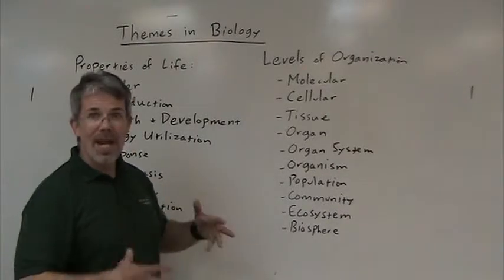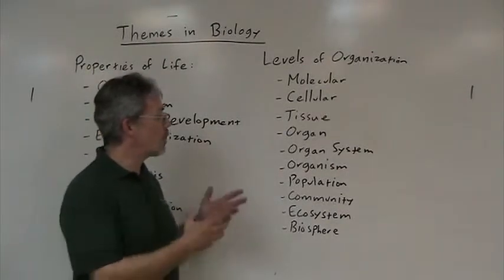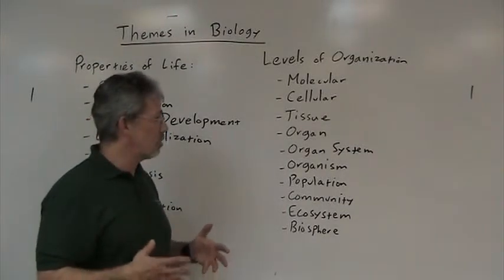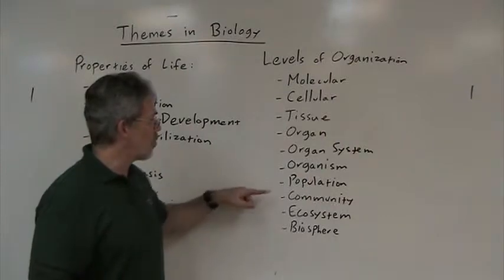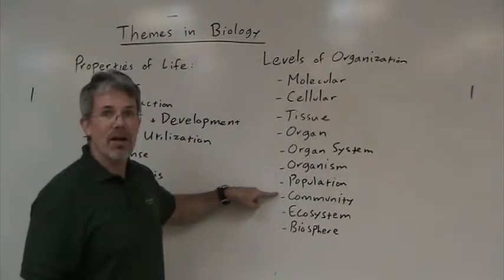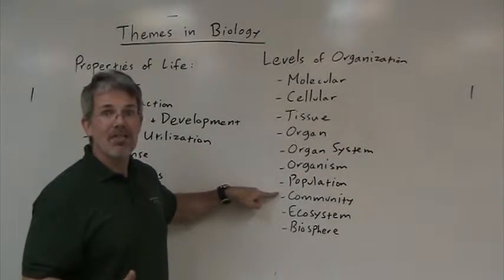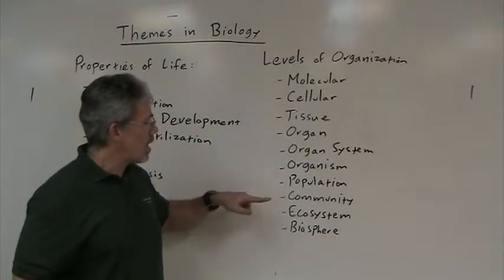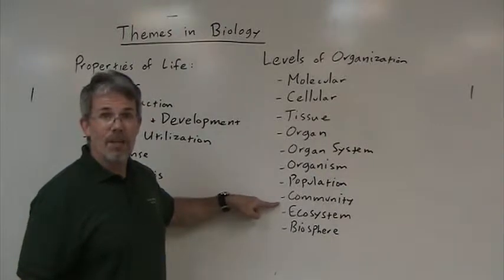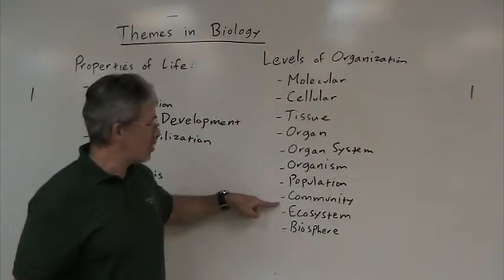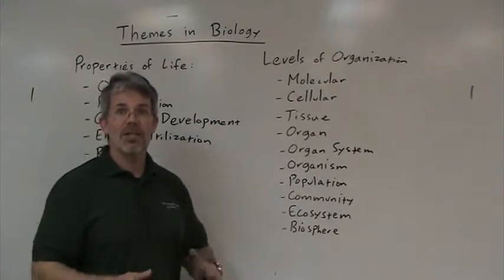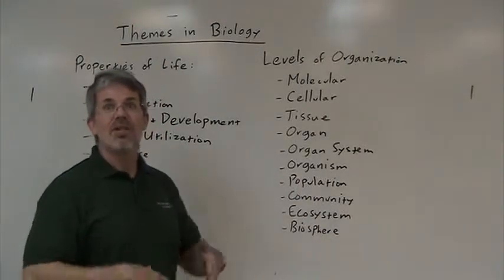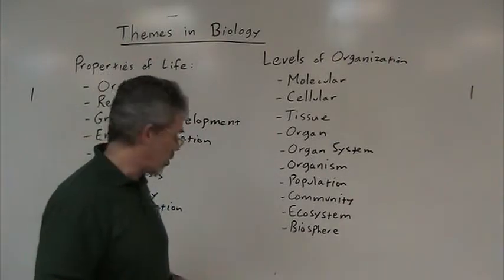But in nature, organisms hang out with others of their own kind, and we call that level the population. Populations have to interact with each other — predator-prey relationships and so forth. So all of the populations in an area, all of the living things in an area, is known as the community. The community has to interact with its nonliving environment, and that level is the ecosystem. Put everything together and you have the biosphere — the entire area of planet Earth where life exists, or the sum total of all Earth's ecosystems.